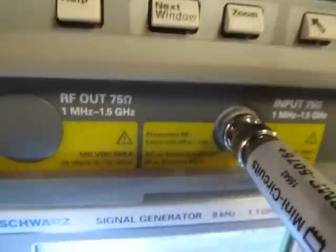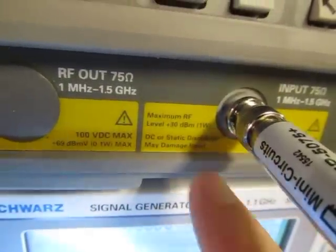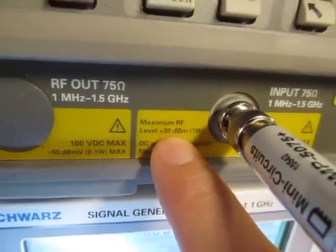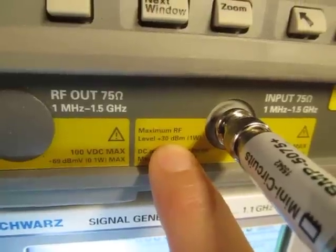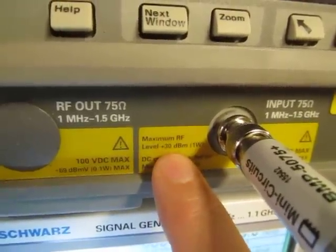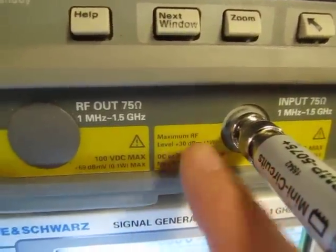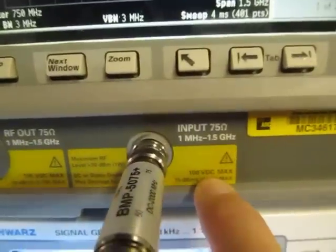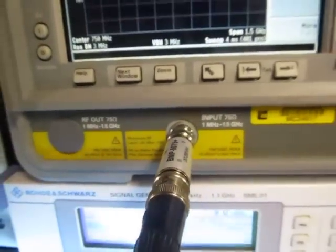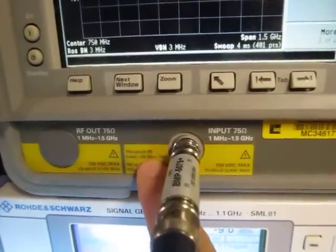The other thing you may want to note is what is the maximum RF input level. See this one says plus 30 dBm, that's one watt. And that's kind of typical in terms of spectrum analyzer. Don't exceed that. So you may want to ensure that you can attenuate your signal down below that level.